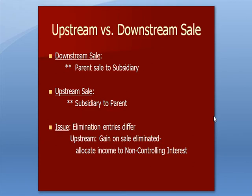Upstream versus downstream sale: a downstream sale goes from parent to subsidiary, like water running down a hill. An upstream sale goes from subsidiary up to parent. The key issue is that the elimination entries are different. Specifically, on the upstream sale — which is the subject of this video — the gain on sale is eliminated when we allocate income to the non-controlling interest, which in this case owns 20% of the entity.